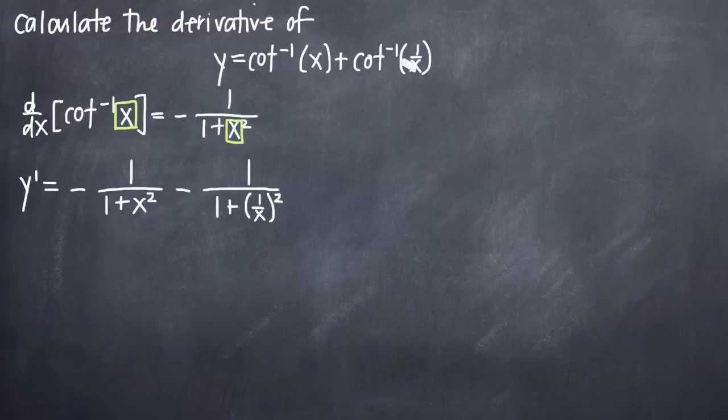The other thing we have to remember is that whenever we have anything other than x inside of our arc cotangent function, we need to multiply by the derivative of the inside function. So that's a chain rule application. Chain rule tells us that we take the derivative of our outside function first, so we take the derivative of cotangent,